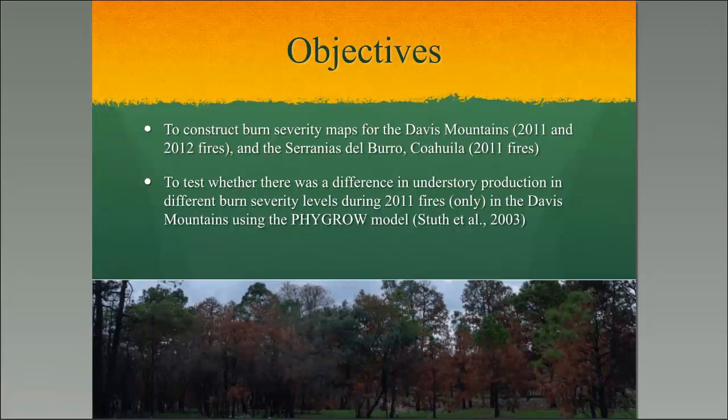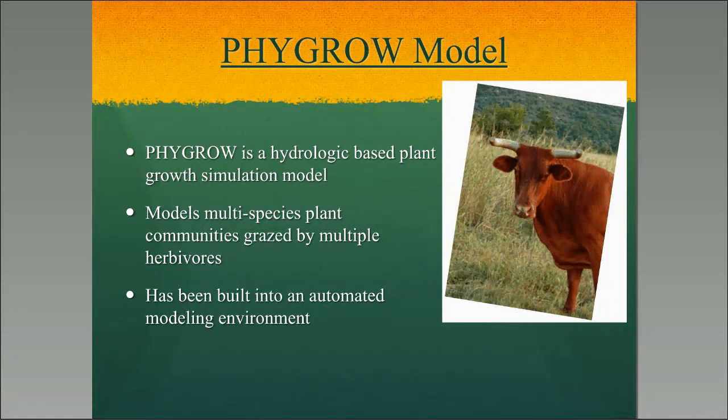The FIGRO model was developed in the Center of Natural Resource Information Technology, where I work in Temple. Dr. Jerry Stuth was one of the founders of that group. The model, historically in the early 90s, was used for drought and early warning predictions in Mongolia. It's been used in other countries — Kenya, Ethiopia, Afghanistan, and others. In the last ten years we've been using it in the US, on some test ranches, at Fort Hood, and in projects with the U.S. Forest Service in New Mexico and Arizona.